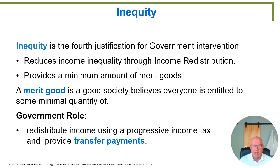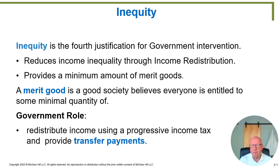The government steps in using taxation to transfer money either directly as a transfer payment — a cash payment someone can use to spend on a particular good — or the government could provide the good directly, like public schools for young people even if their parents cannot afford it. We believe school is a merit good and everyone should have some amount of it irrespective of their income.